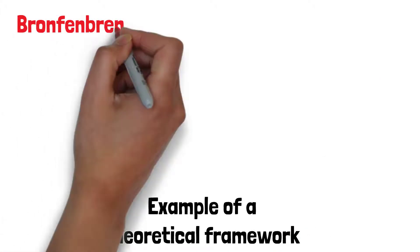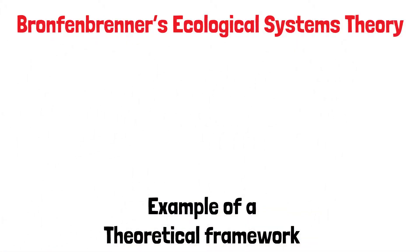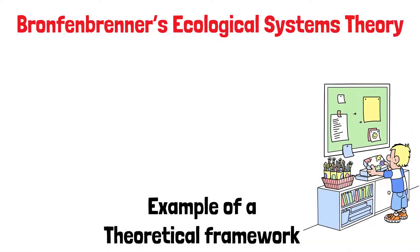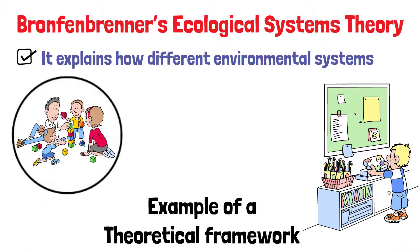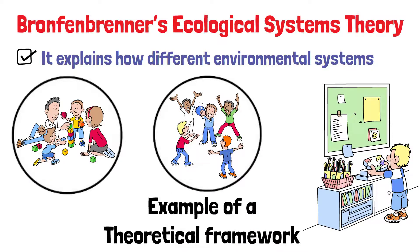Another example is Bronfenbrenner's ecological systems theory, which is used in child development research. It explains how different environmental systems like family and society influence a child's growth.